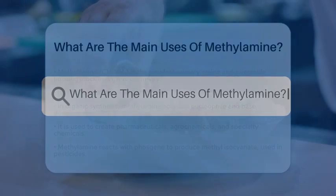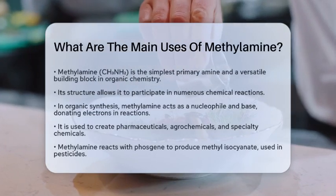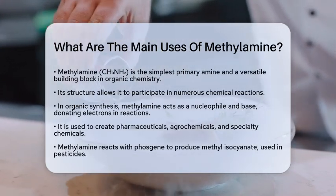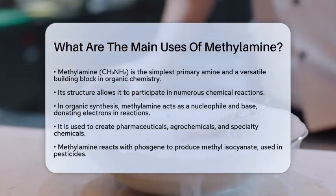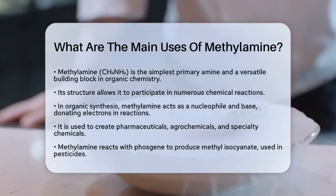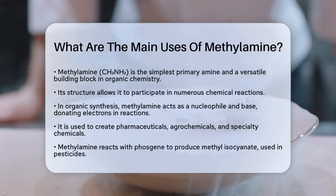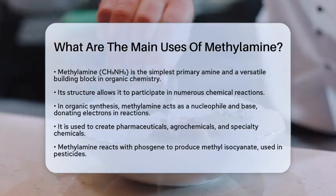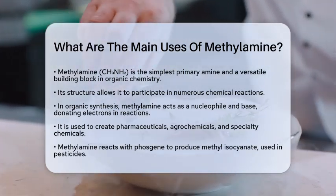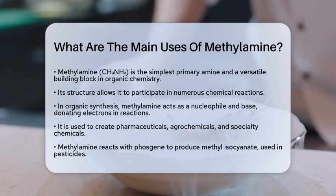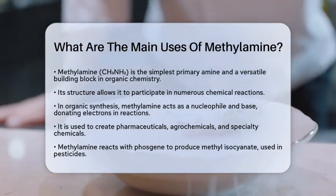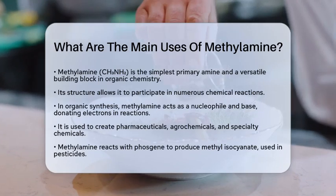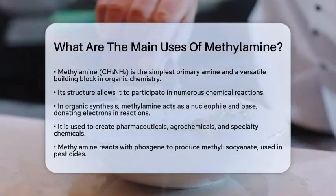What are the main uses of methylamine? Have you ever wondered how a simple compound like methylamine can play such a big role in various industries? Methylamine, with the chemical formula CH3NH2, is the simplest primary amine and serves as a versatile building block in organic chemistry. Its unique structure, featuring a methyl group attached to an amino group, gives it the ability to participate in a wide range of chemical reactions. Let's take a closer look at the main uses of methylamine across different fields.